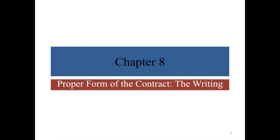Many people think there is a fifth thing needed to have a contract: a writing, some physical manifestation of the contract. There's an old saying you may have heard — that an oral contract isn't worth the paper it's not written on. That's a popular belief, but as we've seen, it's not true under American law. An oral contract is in the vast majority of cases completely enforceable. So when we talk about the writing aspect, we're not talking about it being a fifth element — we just have our four.